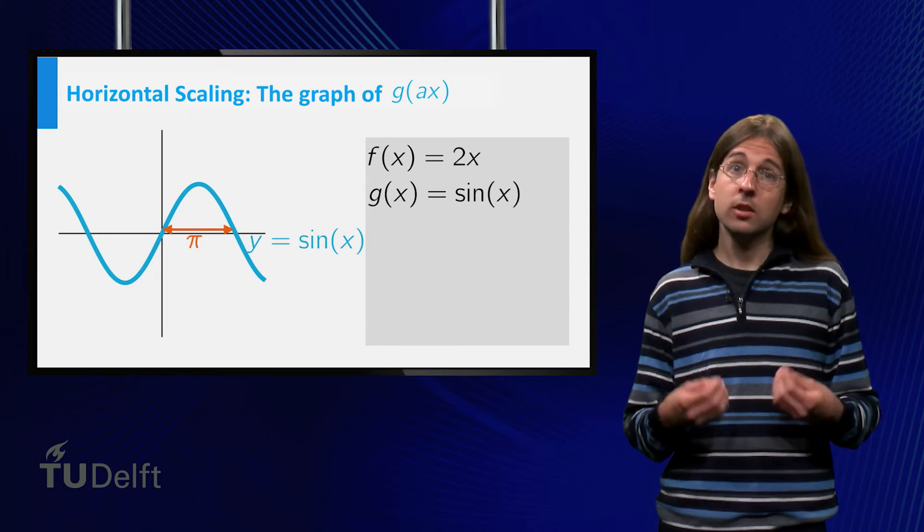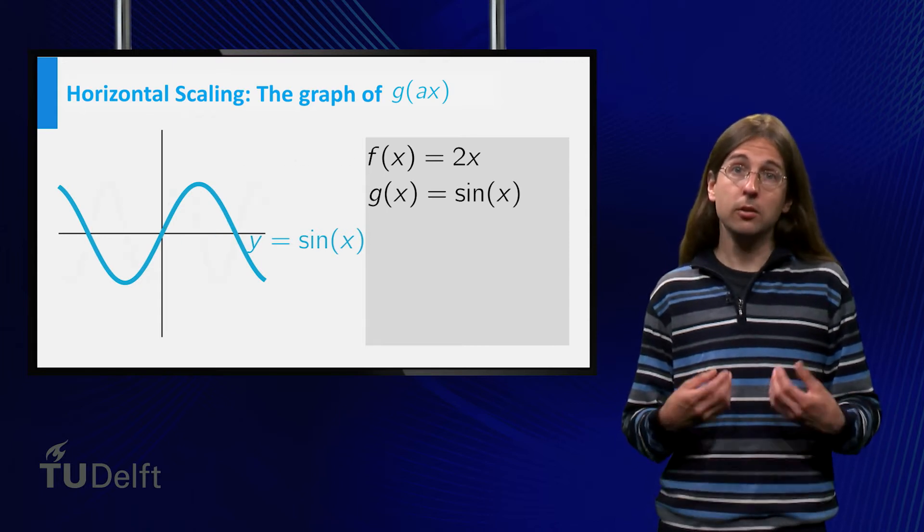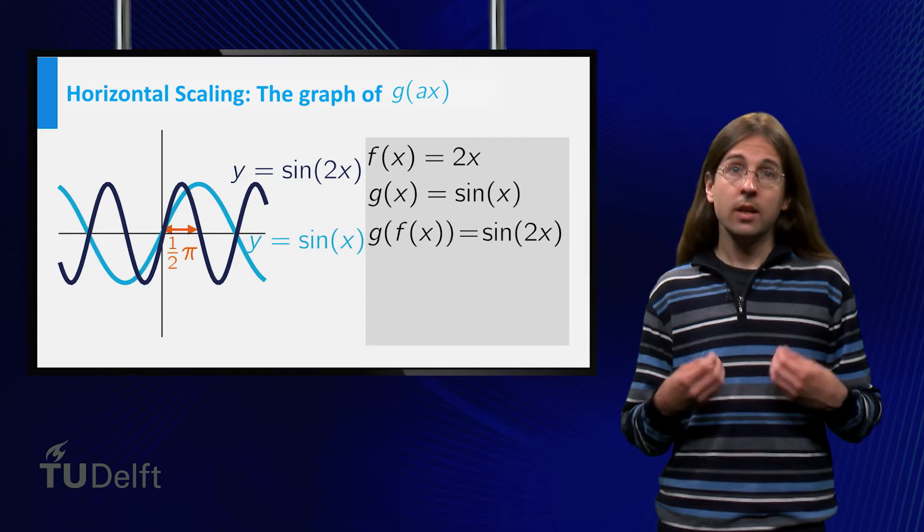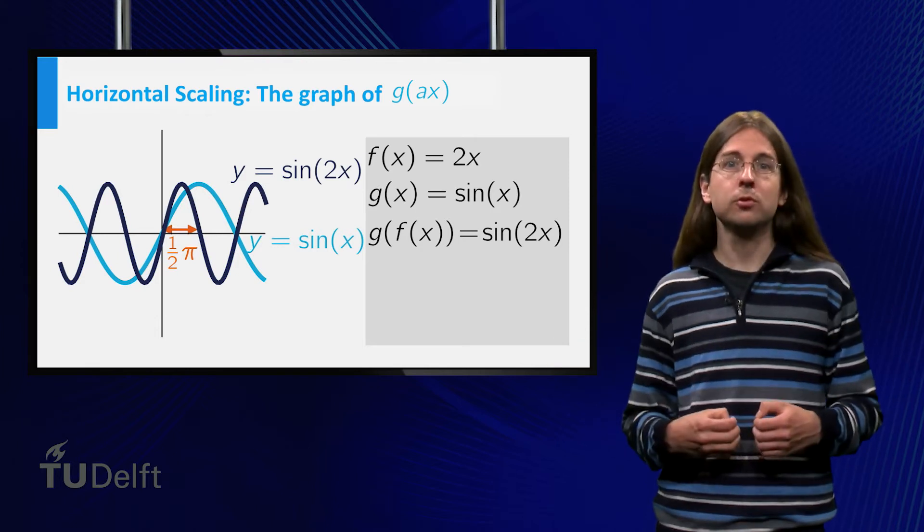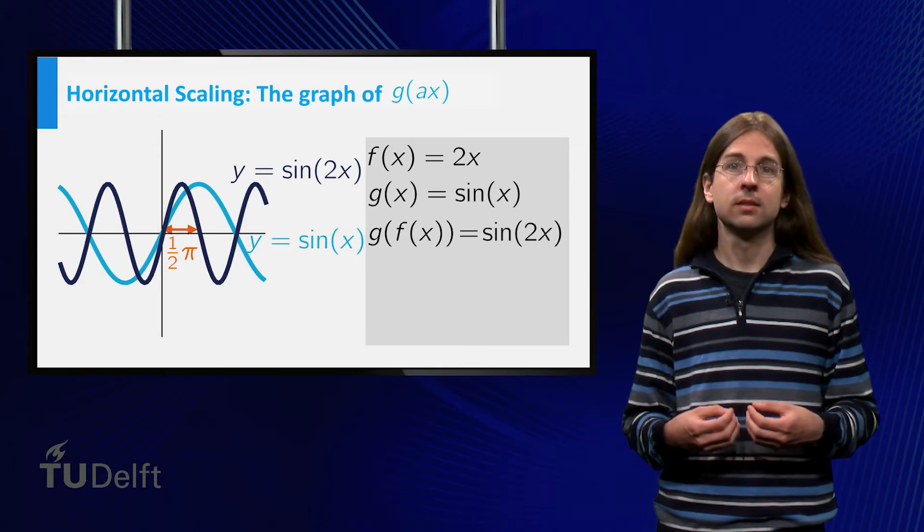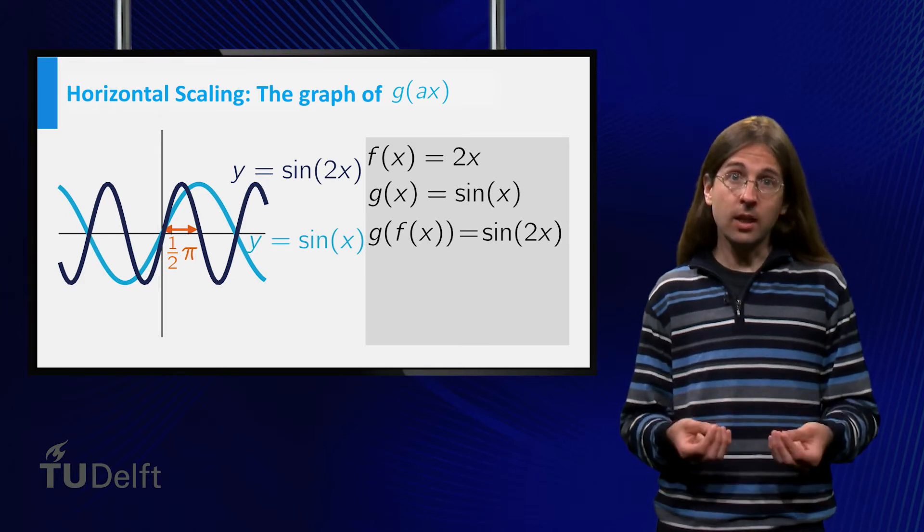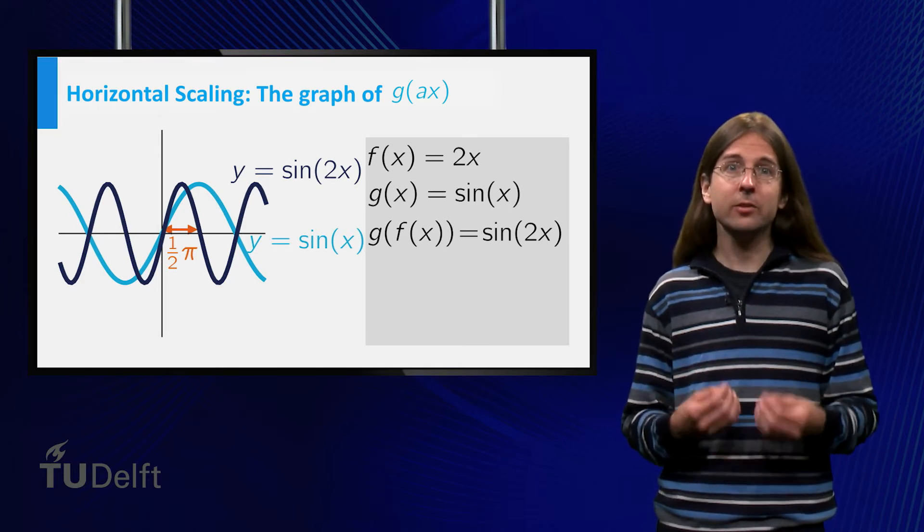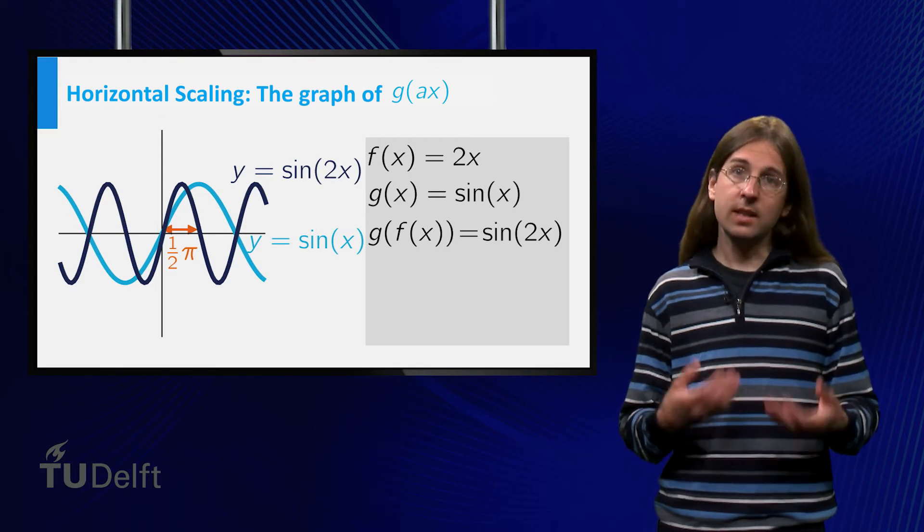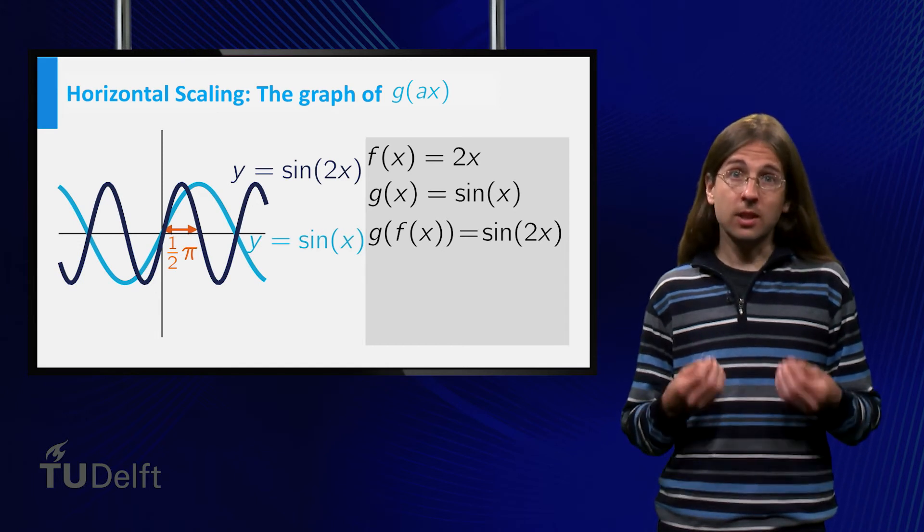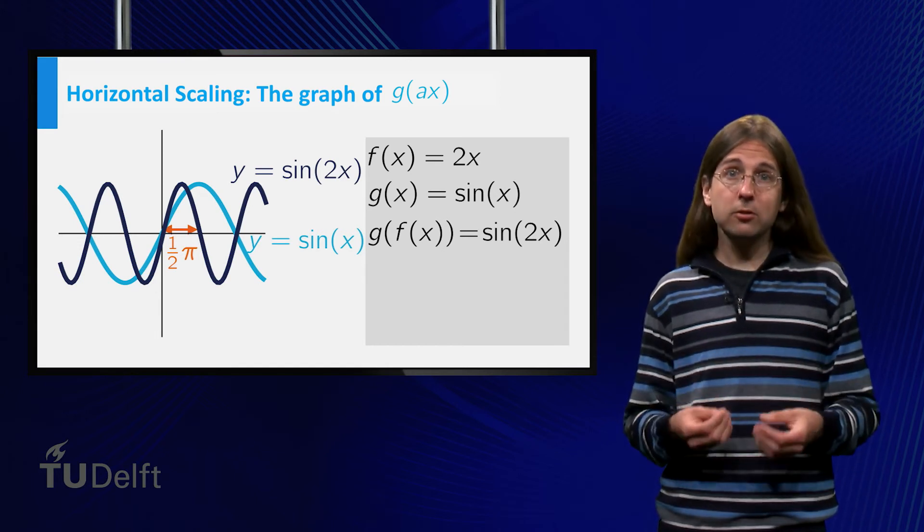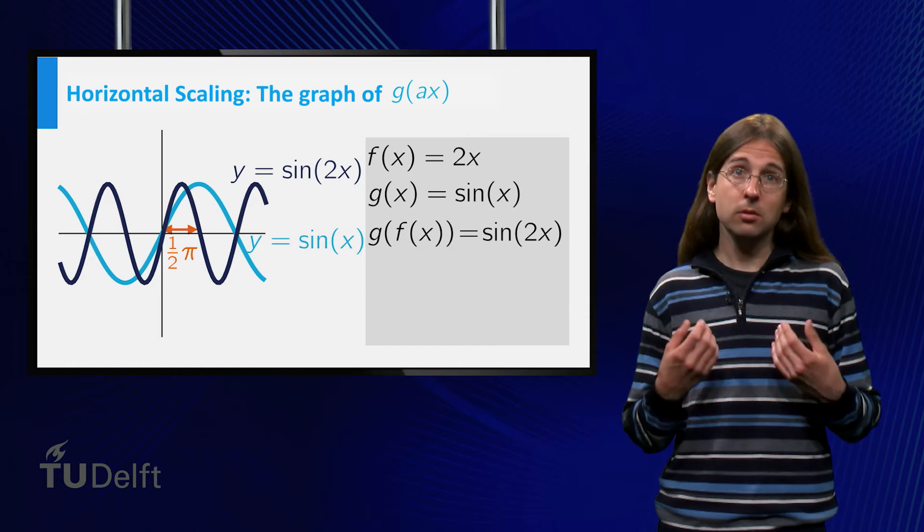Finally we have to consider g of f of x equals sine of 2x. In this case the graph of the sine is shrunk by a factor of 2 to the y-axis. We see that sine of 2x has the same value at x equals 1 as sine of x has at x equals 2. Thus the graph looks identical, but the x values must be shrunk by a factor of 2.